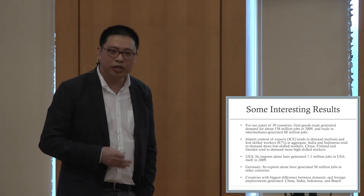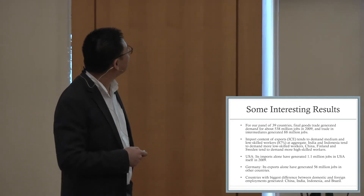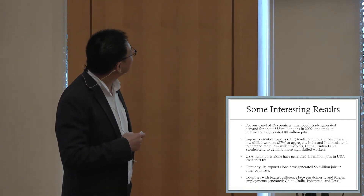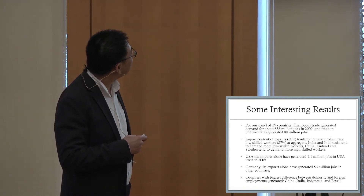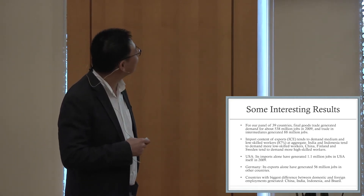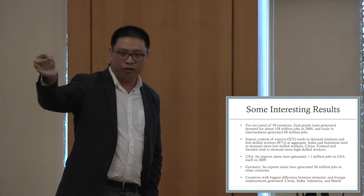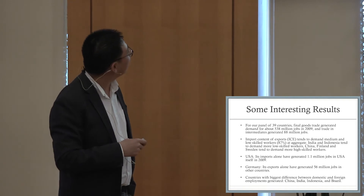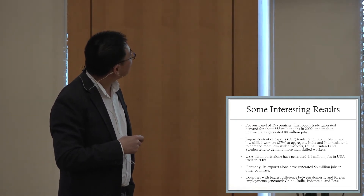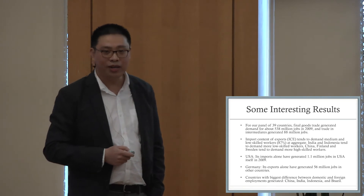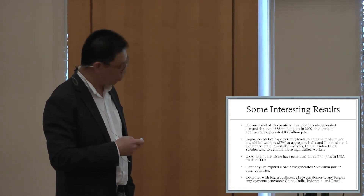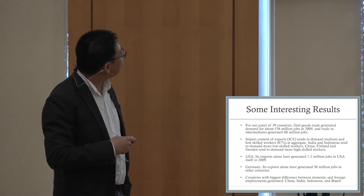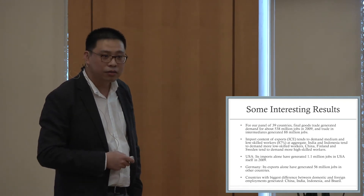For our panel of 39 countries, final goods trade generated about 538 million jobs in the year 2009 — we chose 2009 to avoid the financial crisis data point which ruins the overall pattern. Trading intermediates generated about 88 million jobs in the world; we call those global value chain jobs. Import content of export tends to demand medium and low-skilled workers at the aggregate level.